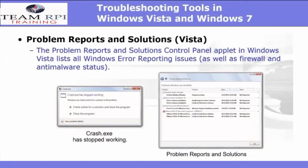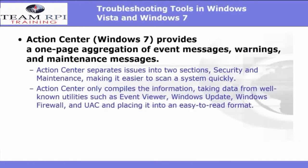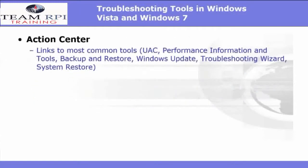Starting with Windows Vista, the Problem Reports and Solutions Control Panel applet lists all Windows error reporting issues. You will also be able to view your firewall and anti-malware status here. In Windows 7, the same reports are available except they're now in the Action Center. It provides a one-page data aggregation of event messages, warnings, and maintenance messages. The Action Center will only compile information from trusted utilities like the Event Viewer, Windows Update, Windows Firewall, and the UAC. Also in the Action Center, you'll find links to the most common tools like performance information and tools, and backup and restore.